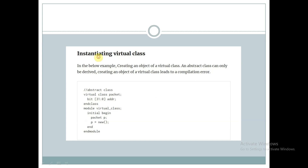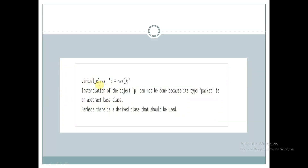What happens if we try to instantiate a virtual class? Here we have declared an abstract virtual class called 'packet' with a property called 'addr', and within the module 'virtual_class' we declare a handle for the class packet as 'p' and try to create an object. We will get this error: instantiation of object 'p' cannot be done because its type 'packet' is an abstract base class. Perhaps there is a derived class that should be used.